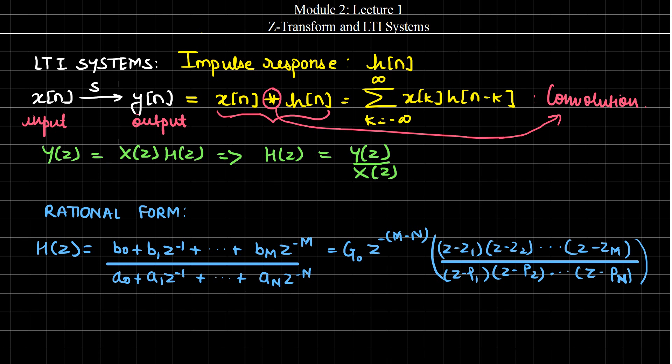We have seen in the properties of Z-transform that if we have convolution in the time domain, then we have multiplication in the Z domain. So using that concept, the Z-transform of the output Y can be calculated as X(Z) times H(Z), where X(Z) and H(Z) are the Z-transforms of the input and the impulse response respectively. Therefore, the Z-transform of the impulse response H(Z) equals Y(Z) divided by X(Z).